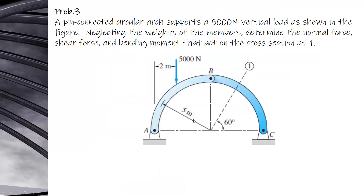The other problem is: a pin-connected circular arc supports a 5,000 Newton vertical load as shown in the figure. Neglecting the weights of the members, determine the normal force, shear force, and bending moment that act on the cross-section at point 1.